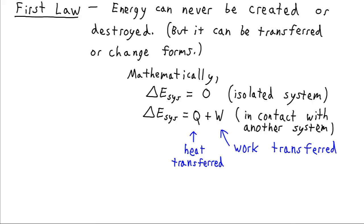We can state this mathematically: if we have a sealed system called an isolated system, the change in energy of that system will always be zero, ΔE_sys = 0. If we have a system which is in contact with another system, its energy can change, but the only way it can change is by adding or removing heat from the system or adding or removing work energy, transferring it to the surroundings: ΔE_sys = Q + W.